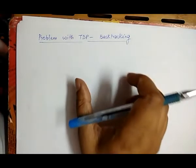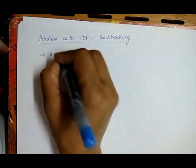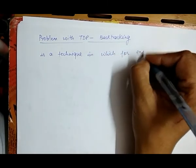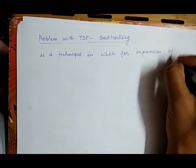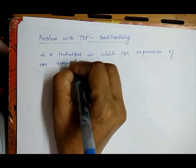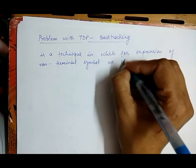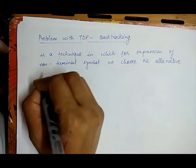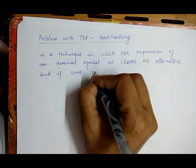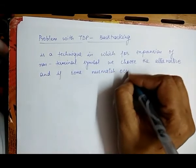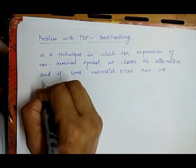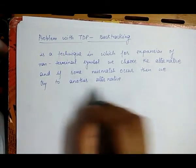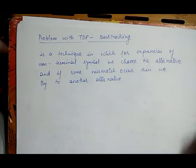Backtracking is a technique in which, for expansion of a non-terminal symbol, we choose an alternative, and if some mismatch occurs, then we try to take another alternative if any. To try another alternative, we have to backtrack. That technique is known as backtracking.